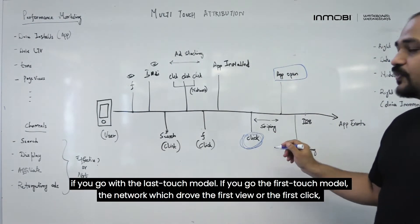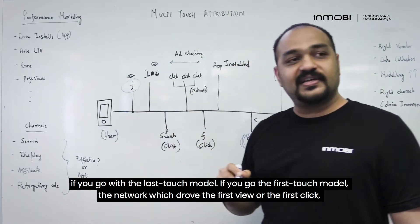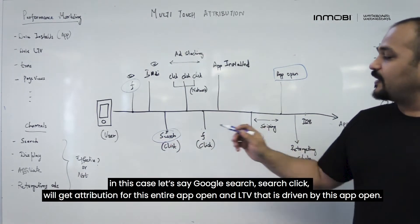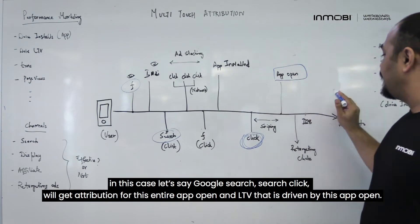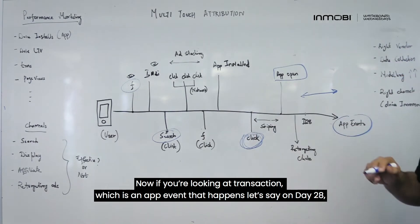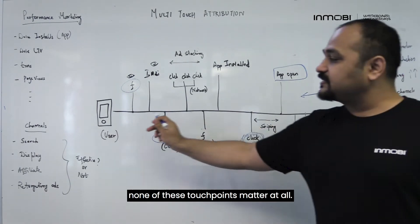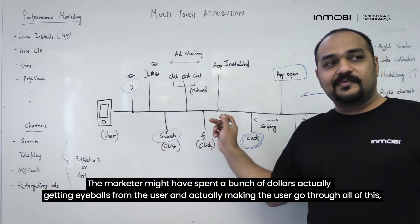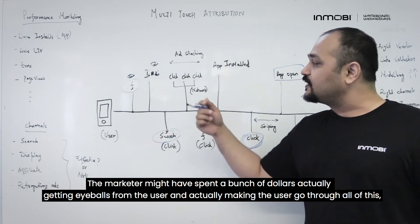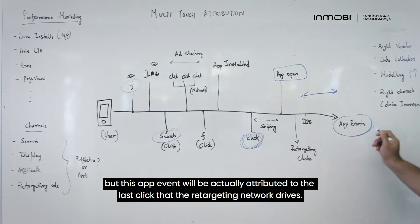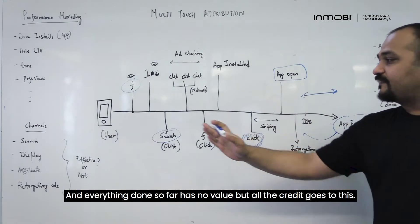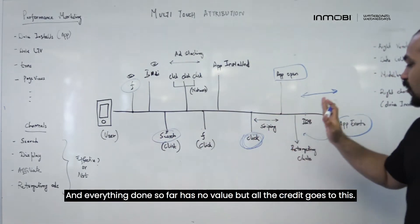If you go the first-touch model, the network which drove the first view or first click — in this case, let's say a Google search click — will get attribution for this entire app open and LTV driven by that app open. Now if you're looking at a transaction, which is an app event that happens, say on day 28, none of these earlier touch points matter at all. The marketer might have spent a bunch of dollars getting eyeballs from the user through this entire journey, but this app event will be attributed to the last click that the retargeting network drives. Everything done so far has no value — all the credit goes to that last click.